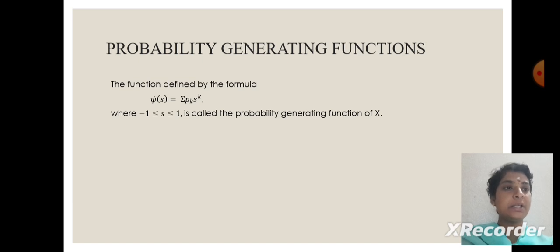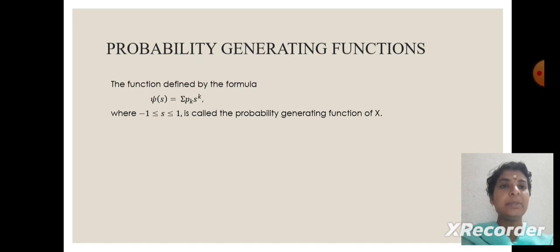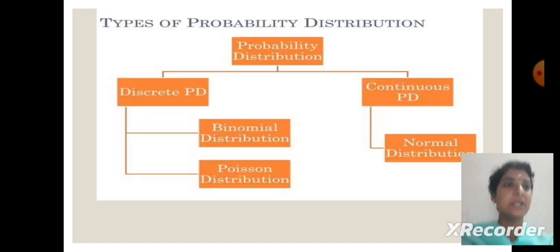Probability generating function is defined by the formula psi of x equal to expectation of p of k times s power k. The limit of s from minus 1 to plus 1 is called the probability generating function of x.